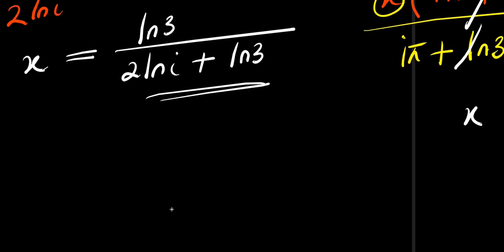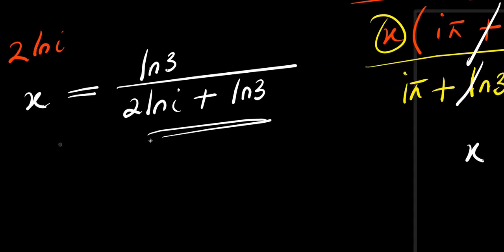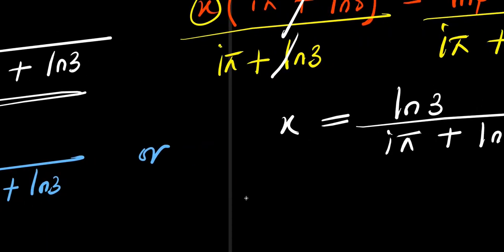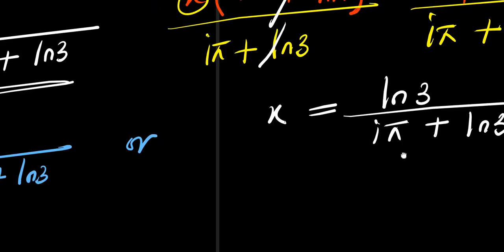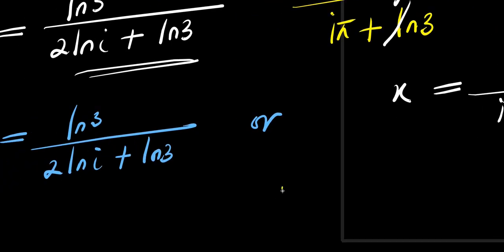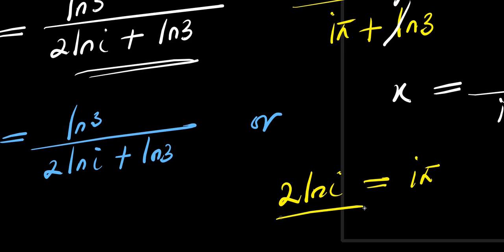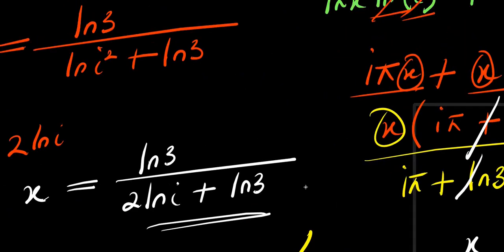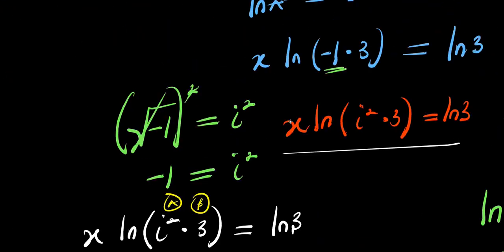So we have two different-looking answers, but they are the same. From method one: x equals natural log of 3 divided by i times pi plus natural log of 3. From method two: x equals natural log of 3 divided by 2 times natural log of i plus natural log of 3. These are equal because 2 times natural log of i equals i times pi. So both solutions are the same, and this is how you solve this exponential problem.